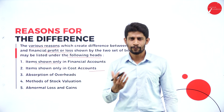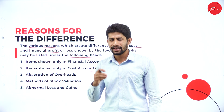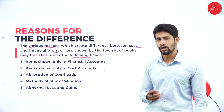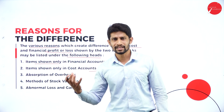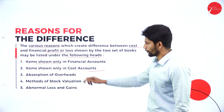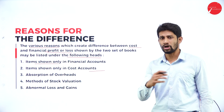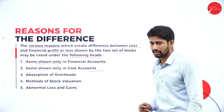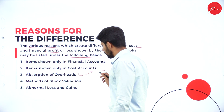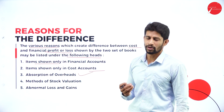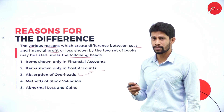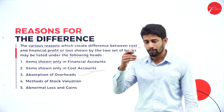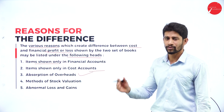The second reason: items shown only in the cost accounts. Here, certain items are shown only in the cost accounts, and because of that there will be a difference in profit between the two accounts — cost and financial. For example, expenditures: if any expenditures are made, those expenditures are shown only in the cost sheet but not in the financial accounts. If not shown in the financial account, the profit will be less there compared to the costing account.